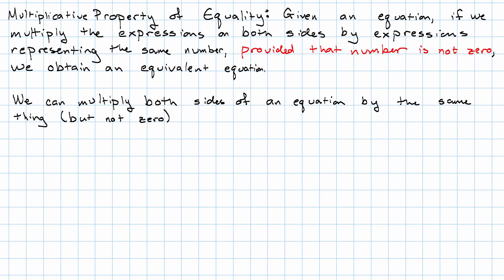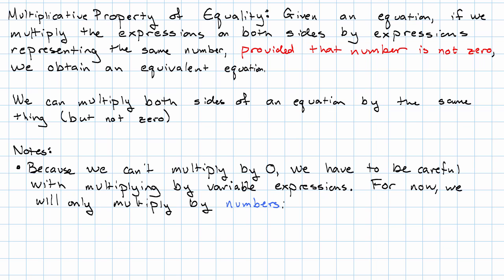Now, that 'not by 0' gives us an extra complication. Because of that rule about multiplying by 0, we have to be very careful about multiplying with variable expressions. For now, we'll only multiply both sides of an equation just by a number.